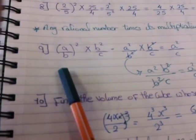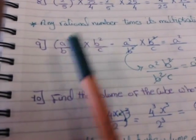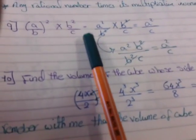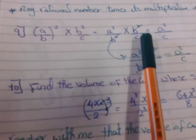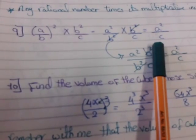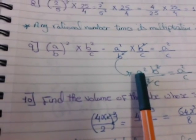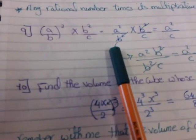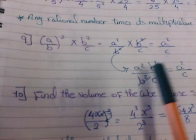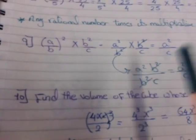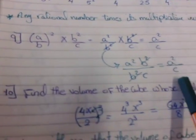Number 9: a over b, all to the power 2, times b power 2 over c. I will distribute the power 2: a power 2 over b power 2, times b power 2 over c power 2. This equals a power 2 over c. Why? Because I have b power 2 on top and b power 2 on the bottom — I cancel them. So I have a power 2 over c.